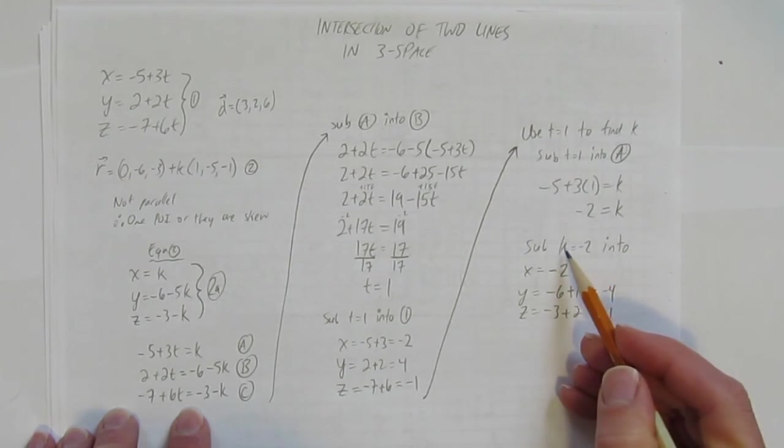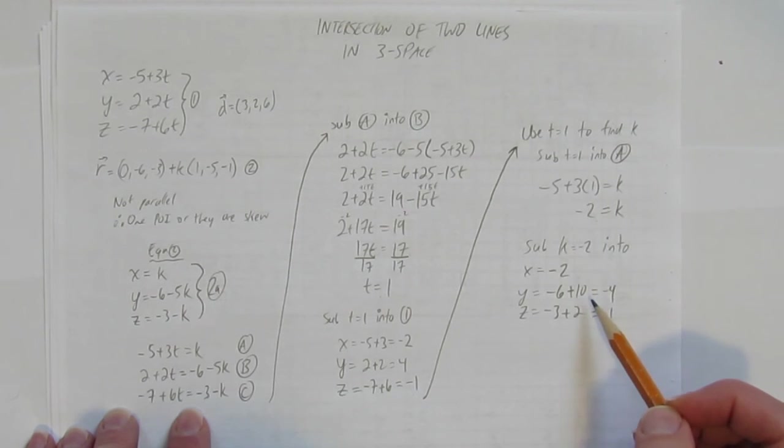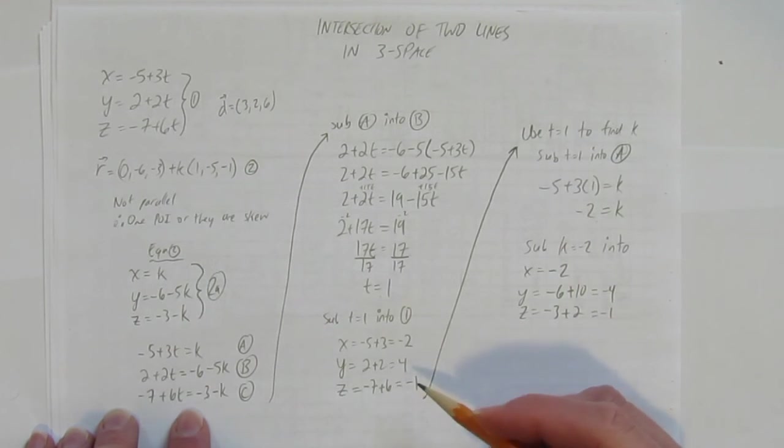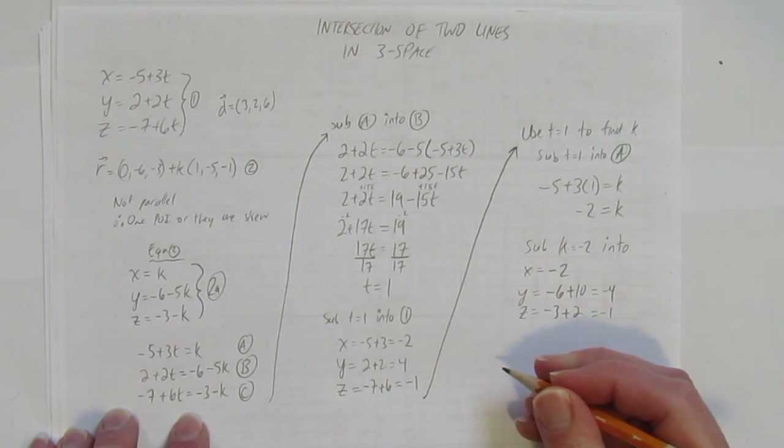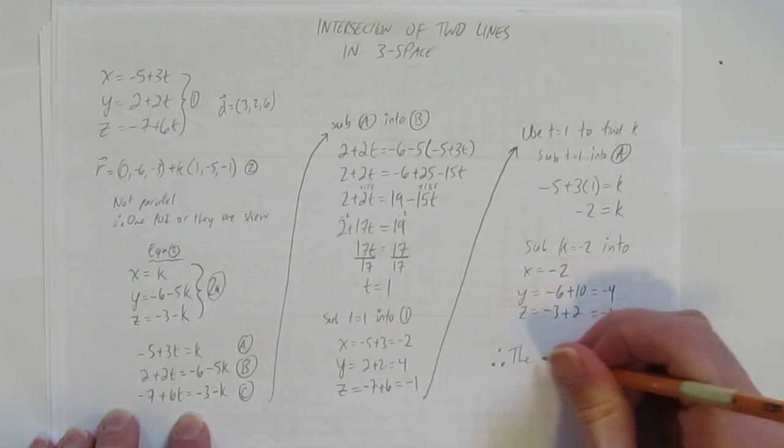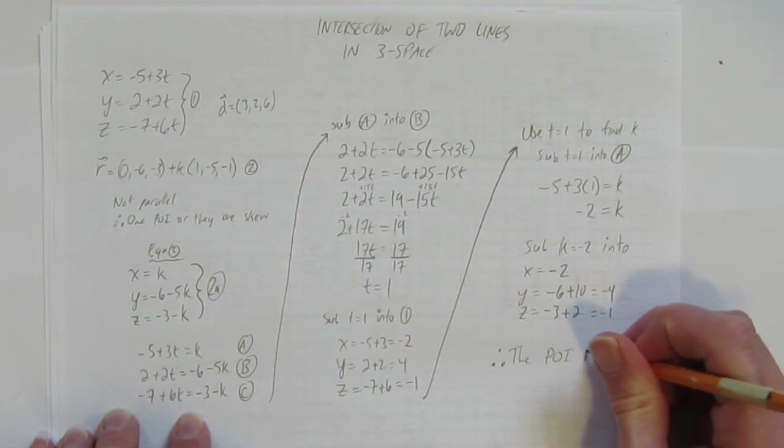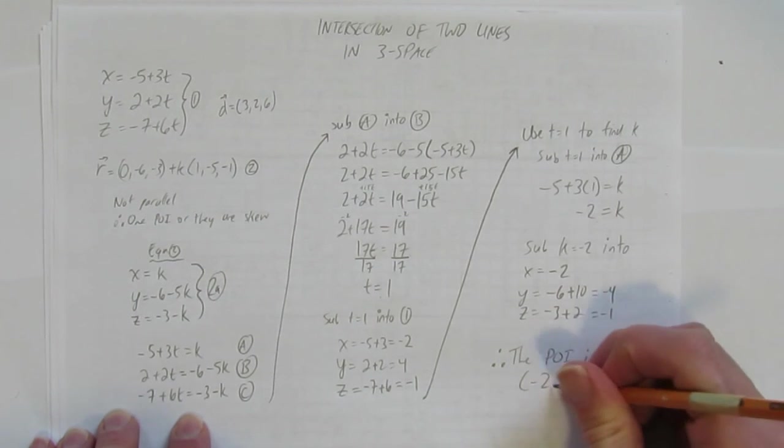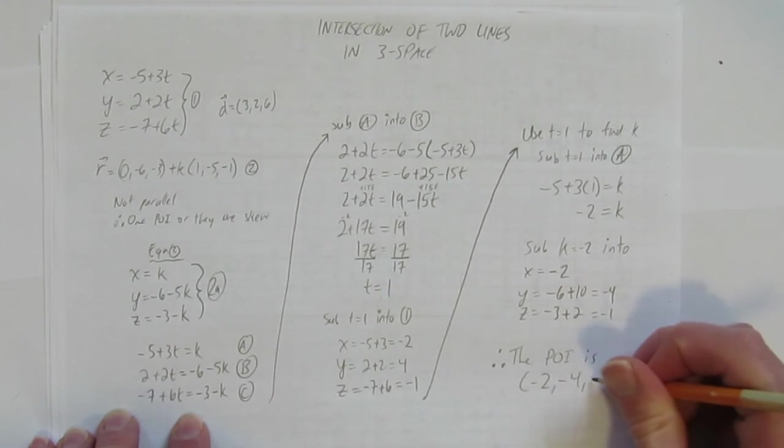Since we've got this k value producing the same point as this t value, we know we've got a point of intersection, and we can write our concluding statement. Therefore, the point of intersection is negative 2, negative 4, and negative 1.